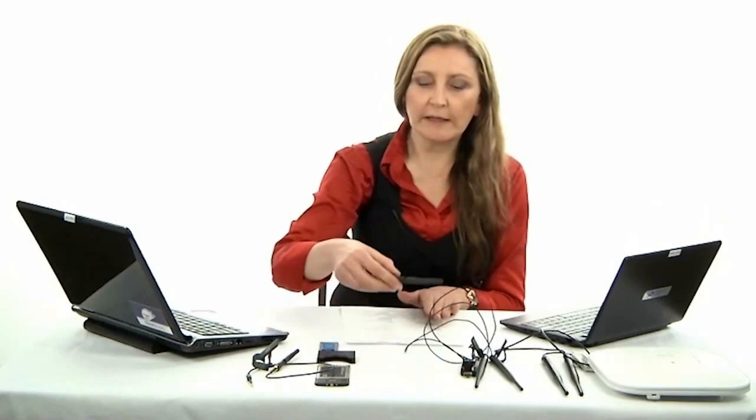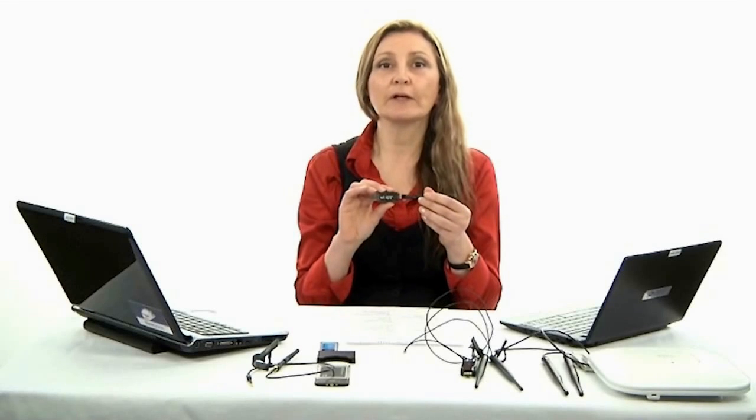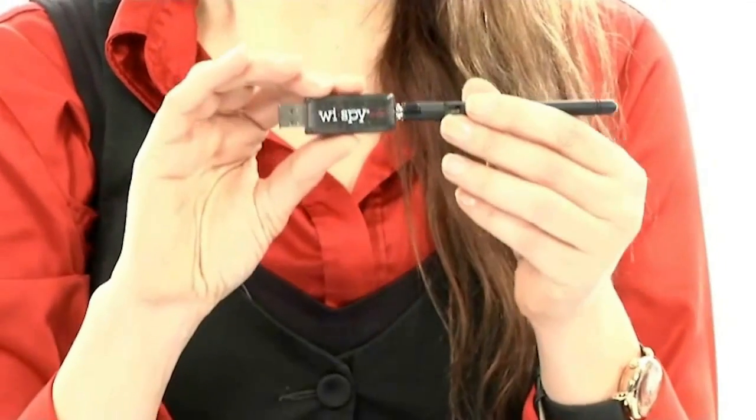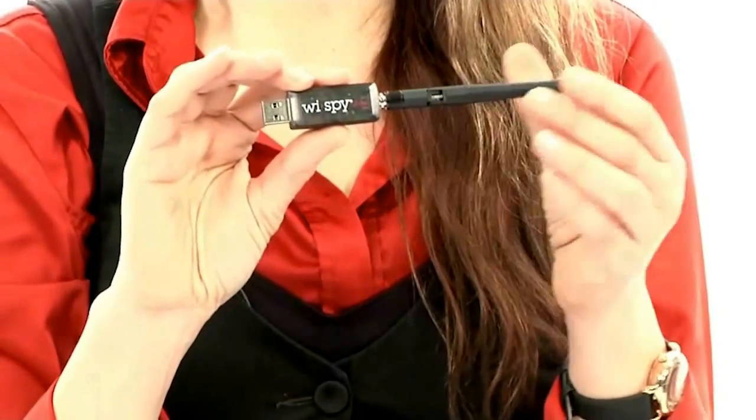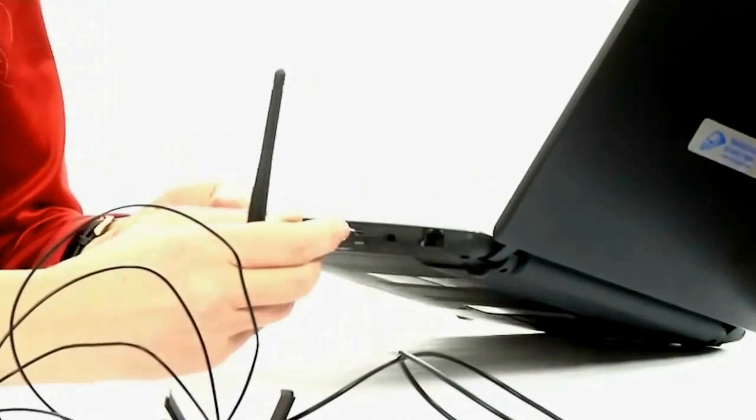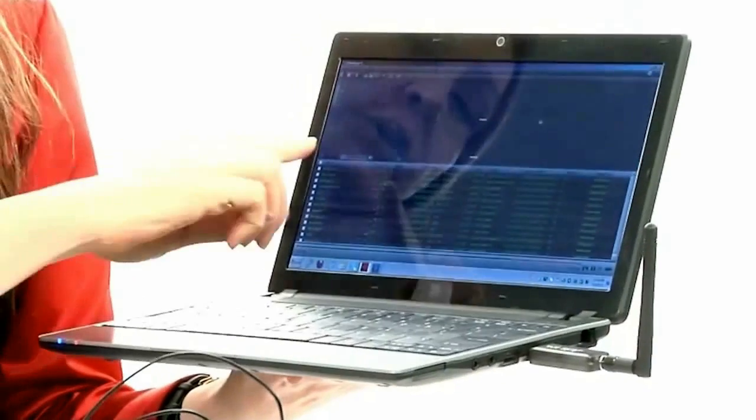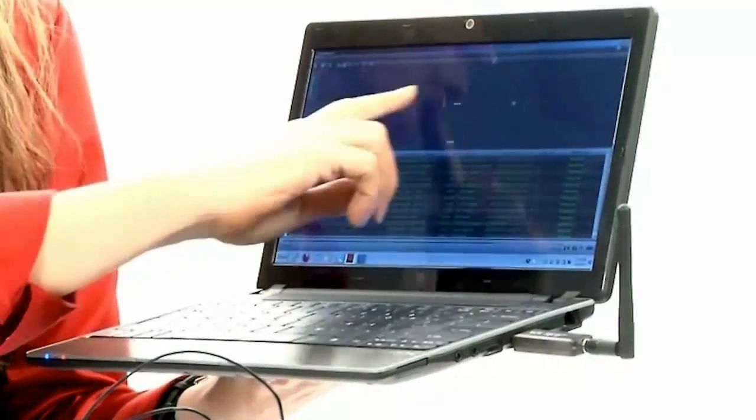This one here is my Wi-Spy by MetaGeek, and it comes with a piece of software called Channelizer. The reason I like this is it's a little less expensive than what you're seeing with the Cisco Spectrum Expert, but it's also very easy to use with almost any laptop because of the USB connection. I can simply put that into my laptop, I've already loaded the software, and now you can start to see that I'm starting to capture data on the spectrum, wireless LANs, other interference sources.